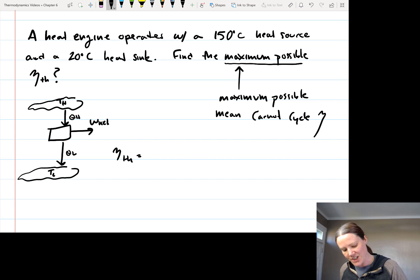So the thermal efficiency, I'm going to specify that, I'm just going to put the reversible here to specify that this is for the Carnot cycle, because we can only use this form of the equation if we have a reversible cycle. So this is 1 minus T low over T high.